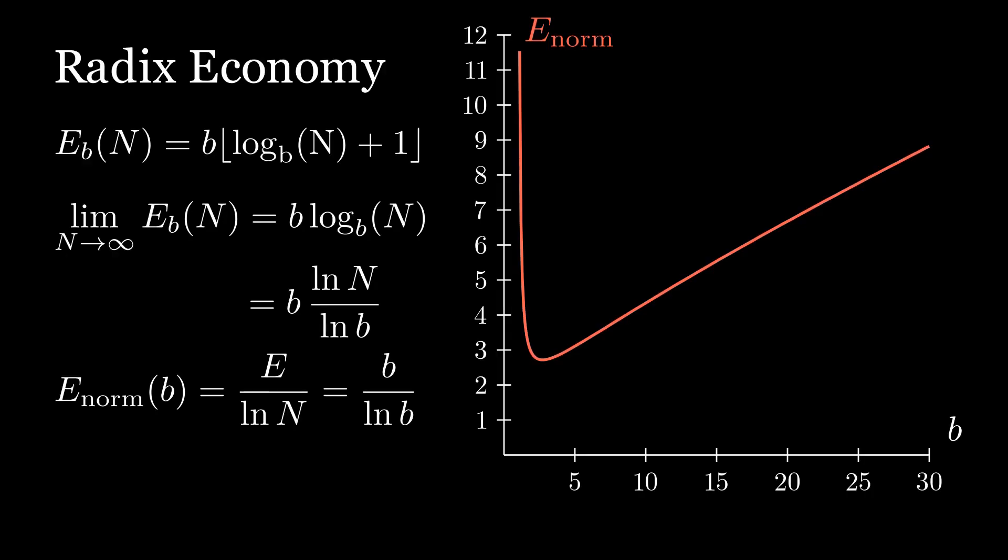This statistic doesn't seem to have an official name, so I'll call it the normalized radix economy. If it does have a name, let me know in the comments, but I couldn't find anything. This measure seems much more intuitive. It's essentially a relative measure of how efficient each base is at writing large numbers on average.